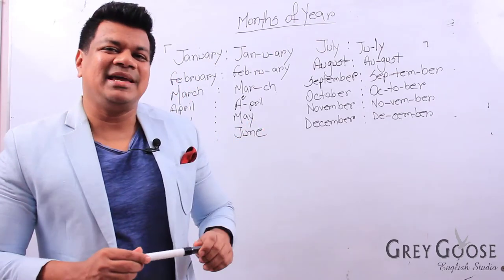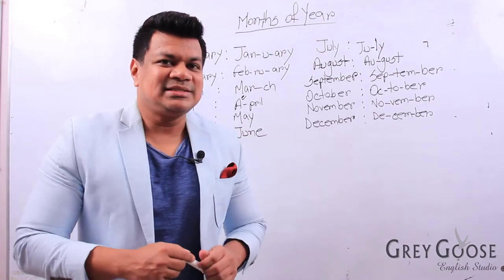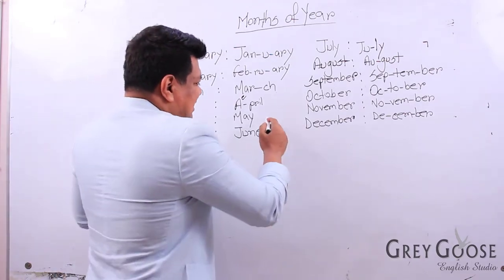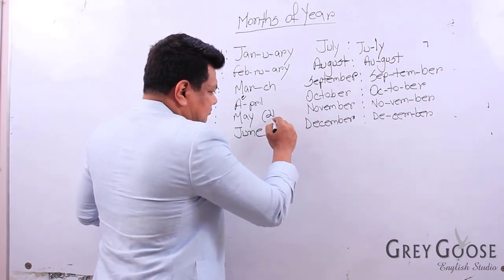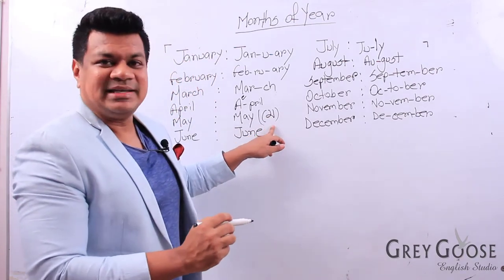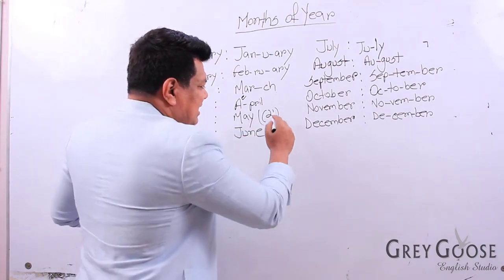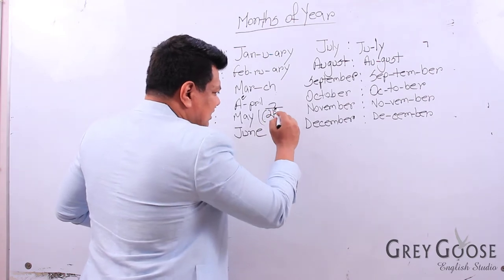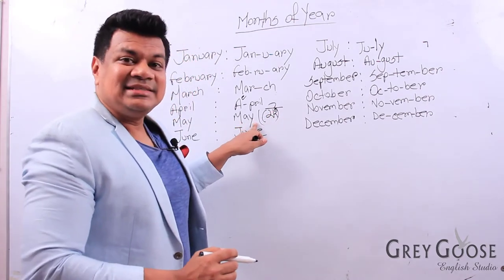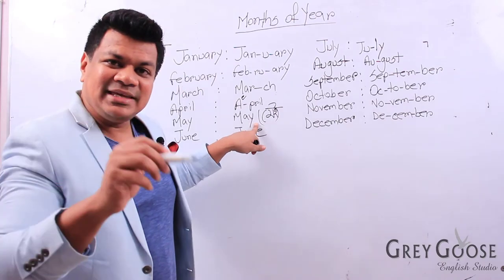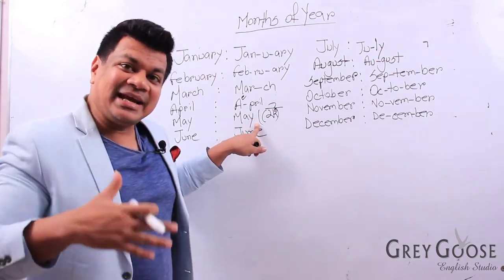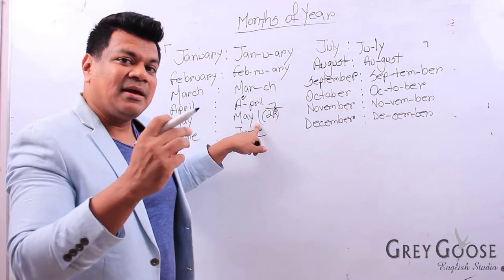Next one: May. Most of the time, people end up prolonging it. Make sure the ending is a short 'e' sound — don't draw it out. It has to be May. So you're going to pronounce it May.